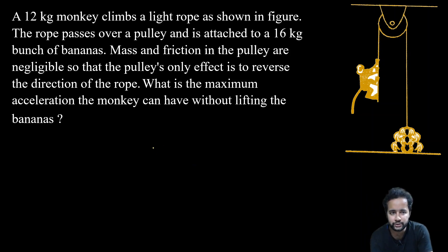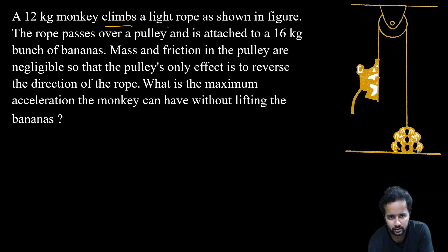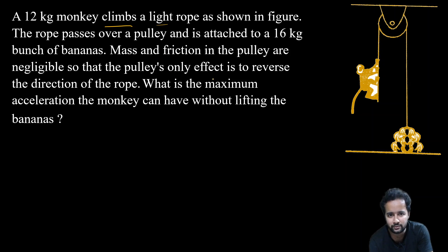Our next question: ek 12 kg monkey hai jo ek light rope claims karta hai as shown in the figure. The rope passes over a pulley and it is attached to a 60 kg bunch of bananas. Mass and friction in the pulley are negligible, so the pulley only changes the direction of the rope. What is the maximum acceleration the monkey can have without lifting the bananas?